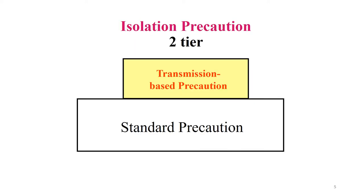There are two tiers when we talk about isolation precaution. The first is standard precaution, which we discussed in the last lecture. And today we are going to look at transmission-based precaution.